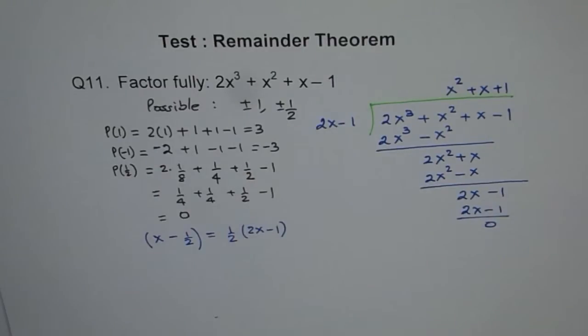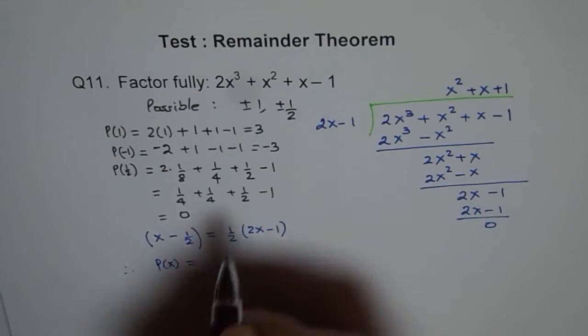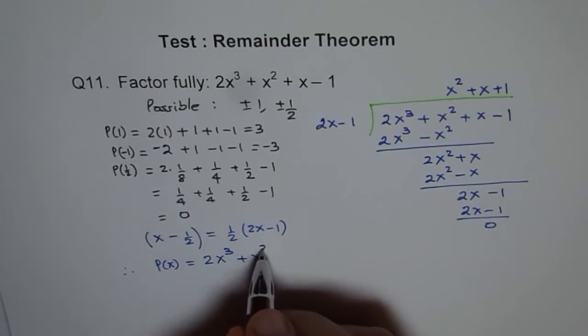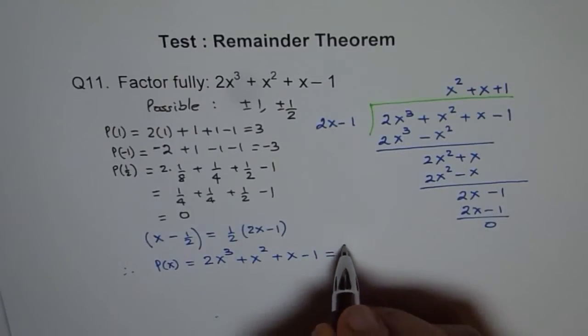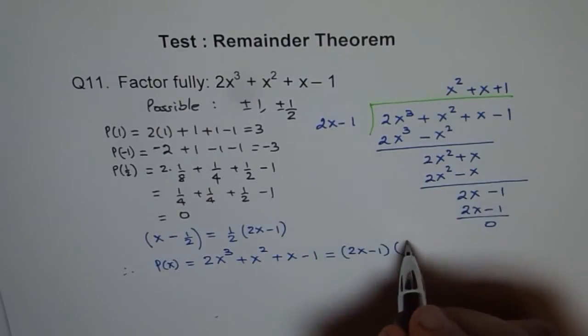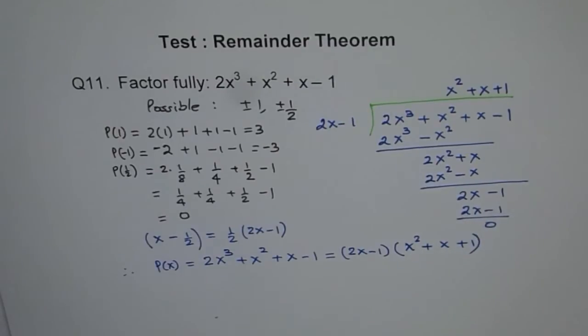So we prove 2x - 1 is our factor. And therefore, we can write the polynomial, which is 2x³ + x² + x - 1, is actually equal to (2x - 1)(x² + x + 1). So that's our factor.